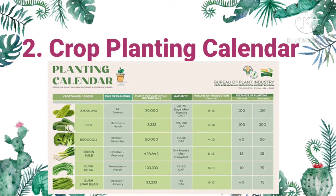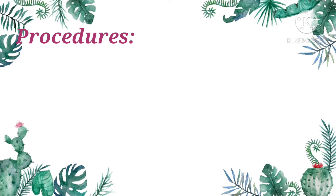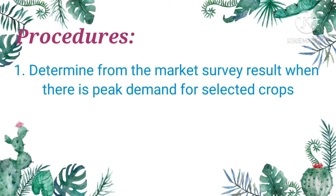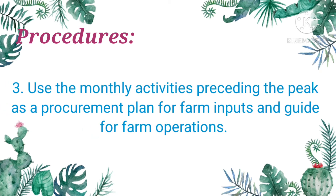Number two pre-cultural practice is the crop planting calendar. Do you use a crop planting calendar to plan production for the next cropping season? A crop planting calendar is a tool for a farmer to plan for production to ensure that marketing coincides with the period of the year when the marketing price of the produce is highest. The procedures for using a crop planting calendar are: First, determine from the market survey results when there is peak demand for selected crops. Work backward from the month of peak demand to prepare monthly farm activities preceding the peak period. Use the monthly activities as a procurement plan for farm inputs and a guide for farm operations.